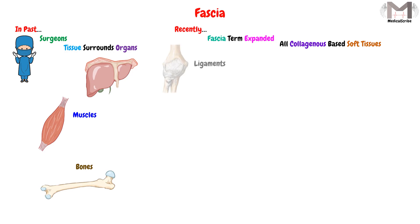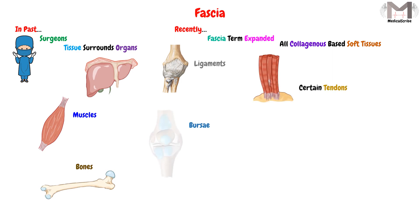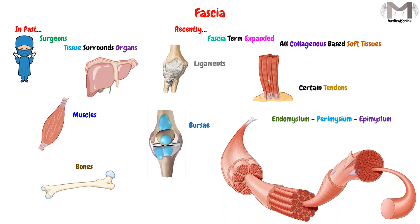Such as ligaments, certain tendons, and even the endomysium, the perimysium, and the epimysium, which are the sheets that enclose the muscle fibers from outside and inside, are also considered part of the fascia.